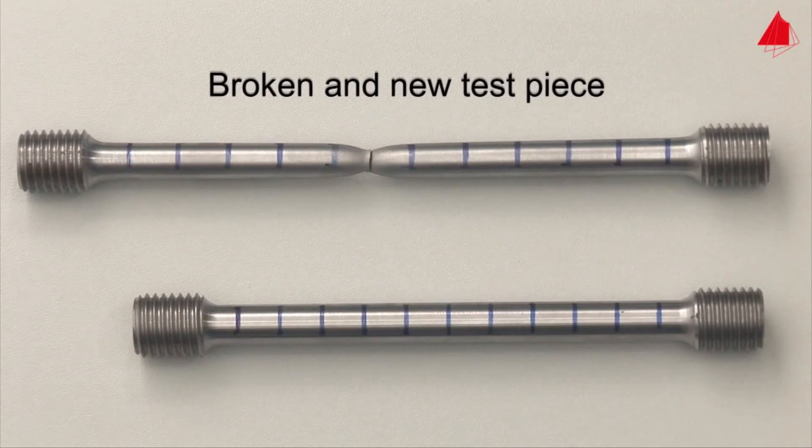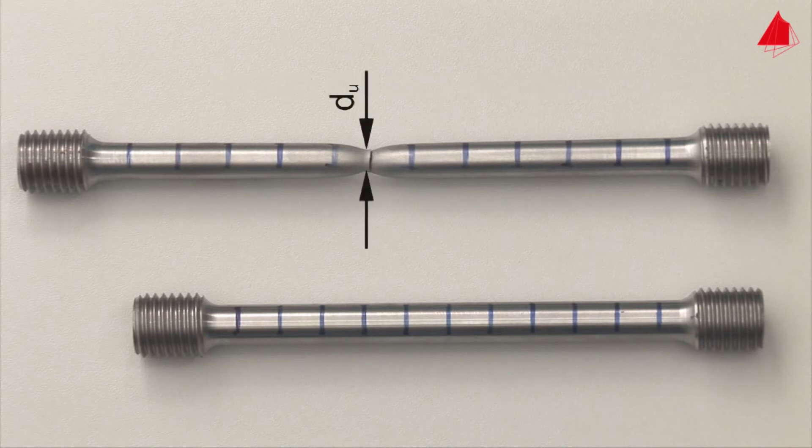Please note that the percentage elongation after fracture depends on the length to diameter ratio. By measuring the smallest diameter at the point of fracture, the percentage reduction of area can be calculated. It describes the reduction of cross-sectional area at the point of fracture in relation to the original cross-sectional area.